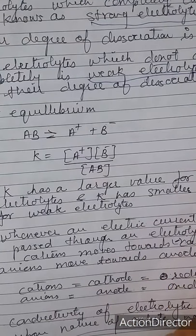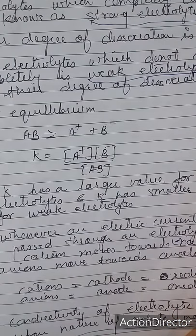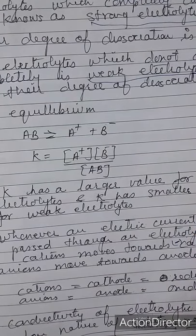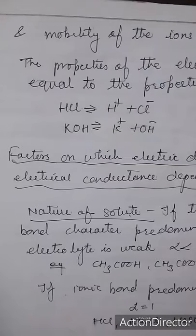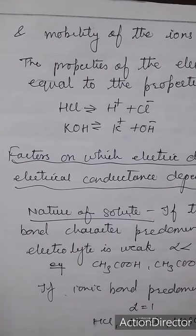Whenever an electric current is passed through an electrolyte, the cations will move towards the negative electrode — the cathode — and anions will move towards the positive electrode — the anode. At the cathode a reduction process will occur, and at the anode an oxidation process will occur. Conductivity of an electrolytic solution depends on many factors such as the nature of the ions, the number of solute molecules, and the mobility of the ions.